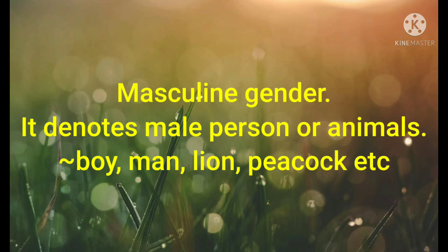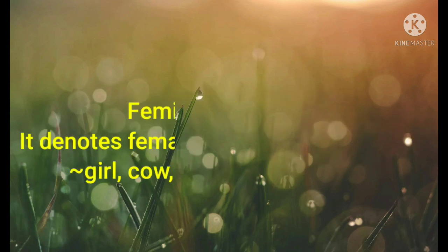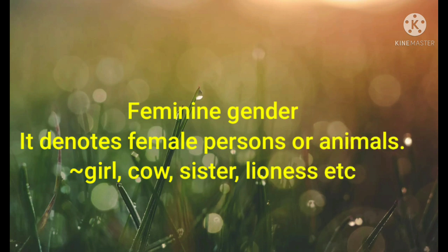Feminine gender: it denotes female persons or animals. Here also we can see that when we talk about feminine gender, it talks about female persons or animals — that means girl, cow, sister, lioness, etc. You can give some more examples.